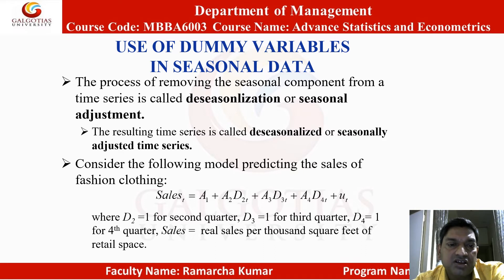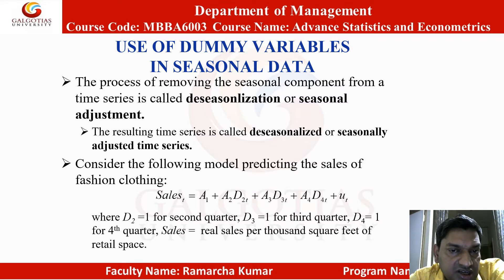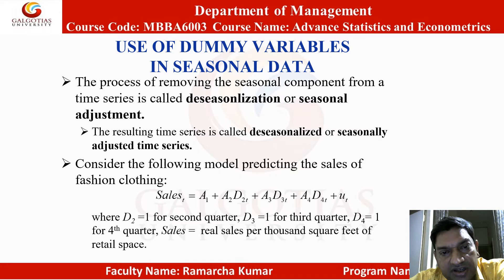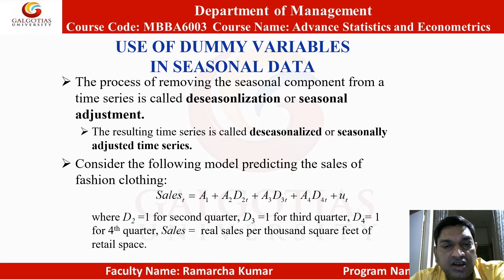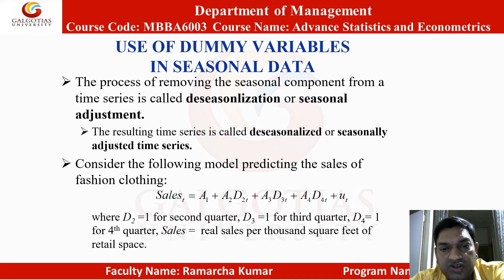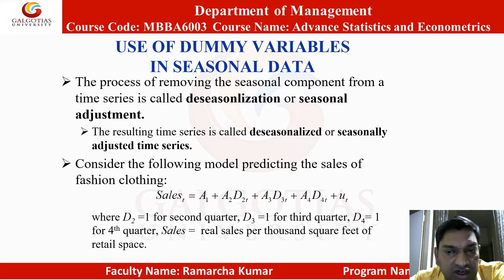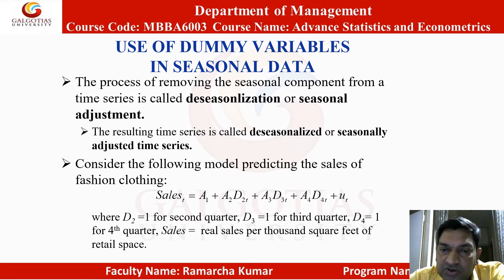Use of dummy variables in seasonal data. The process of removing the seasonal component from a time series is called de-seasonalization or seasonal adjustment, and the resulting series is called a seasonally adjusted time series. Consider the following model predicting sales of fashion clothing: Sales_t = a1 + a2*d2t + a3*d3t + a4*d4t + ut, where d2 = 1 for the second quarter, d3 = 1 for the third quarter, d4 = 1 for the fourth quarter, and sales is real sales per thousand square feet of retail space.